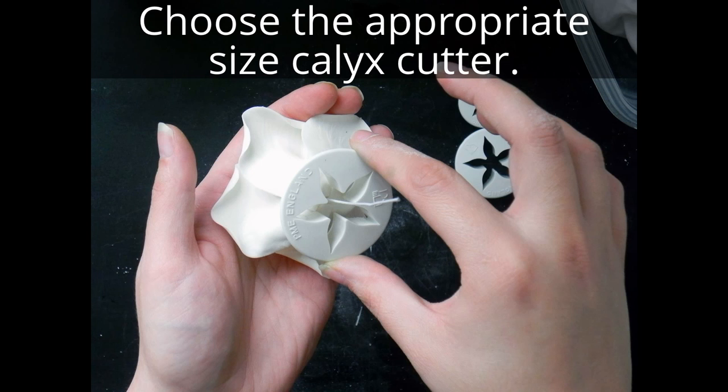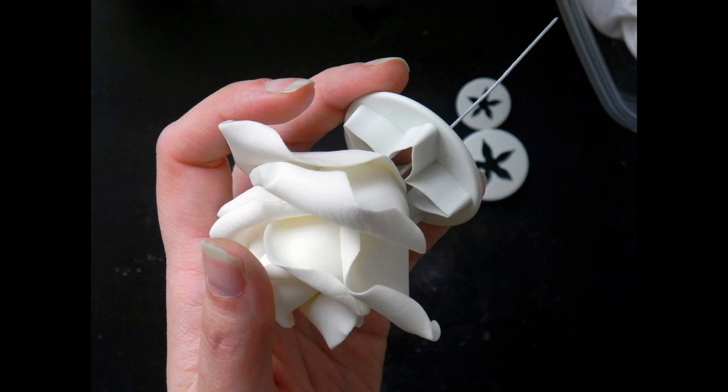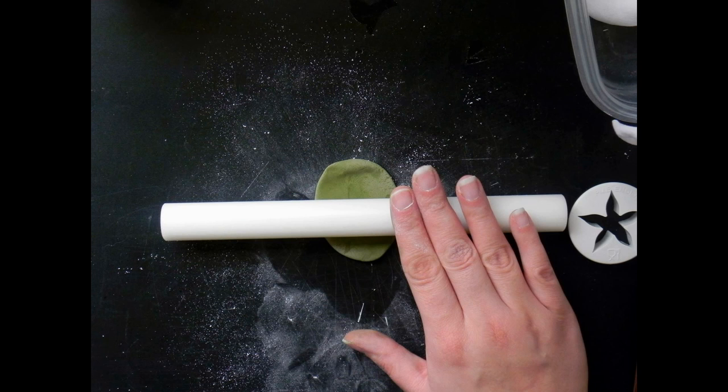First I'm going to size my calyx to my rose by putting it over the back in the stem. I want to see approximately where it's going to come up on my flower to pick the right size. Then I'm going to roll out my gum paste nice and thin.